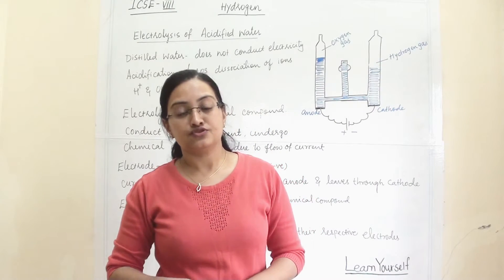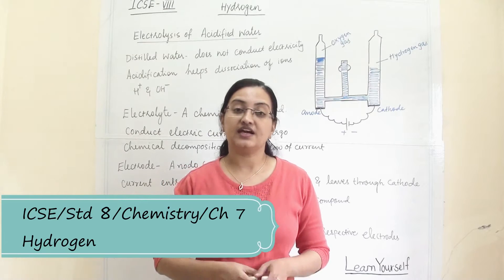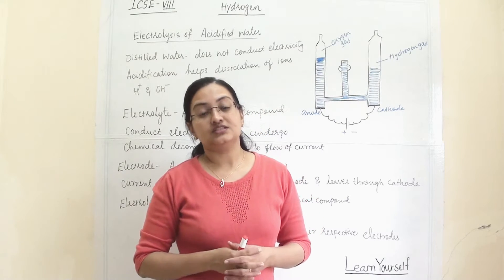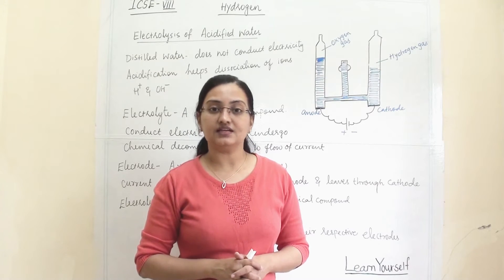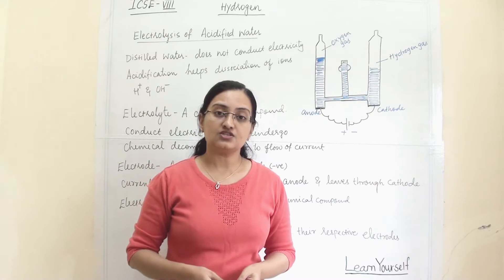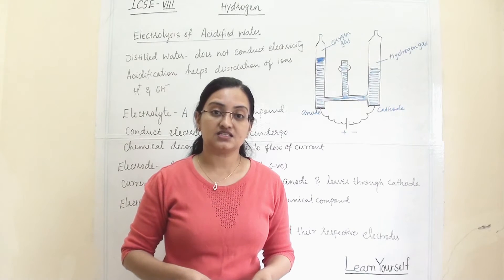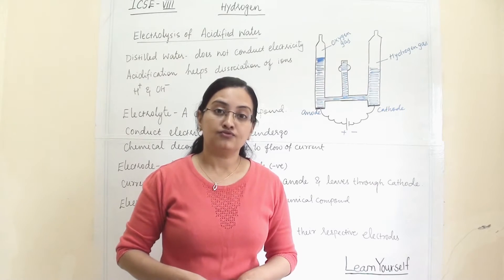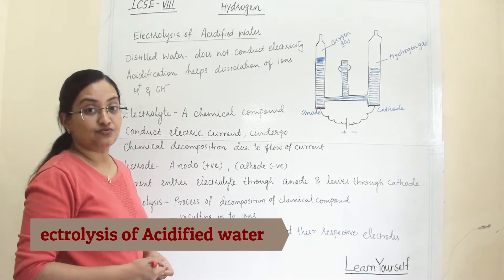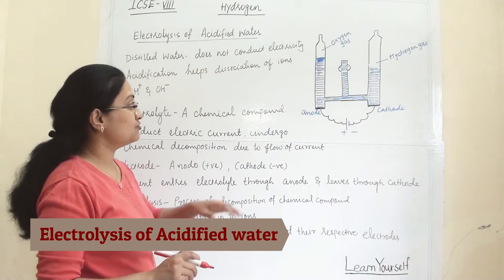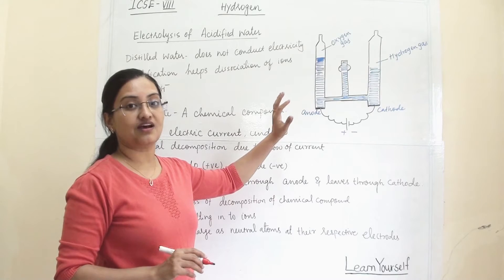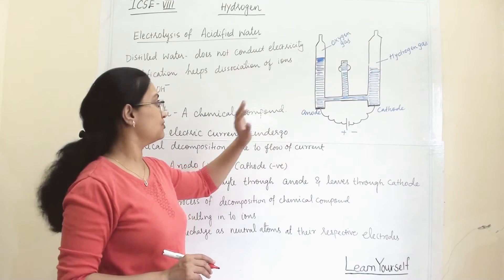Welcome to Learn Yourself. Today we are going to study about an electrolytic cell, how water dissociation can happen in an electrolytic cell, and electrolysis of acidified water. These topics are from ICSE standard 8 syllabus from the chapter Hydrogen. This topic is new as we are discussing how the cell will work and what all components are important in this electrolytic cell.